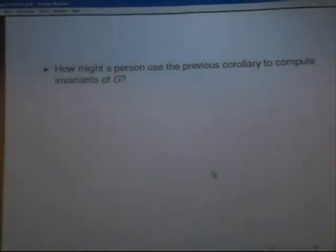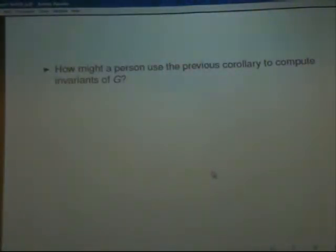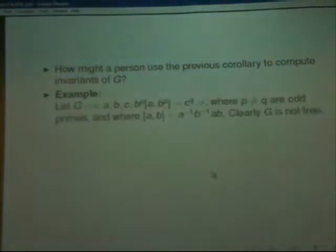So how might a person use the previous corollary to compute invariants of G? Let's actually get involved here. Let's actually get our hands dirty. And I'm going to cite one of your theorems. So let's look at this wonderful group here. And I say wonderful for very special reasons which I might not get to discuss. So here we have a group on three generators subject to this relation. And we have that P, that's not equal to Q, are odd primes, and we're going to define the commutator as being A inverse, B inverse, AB.